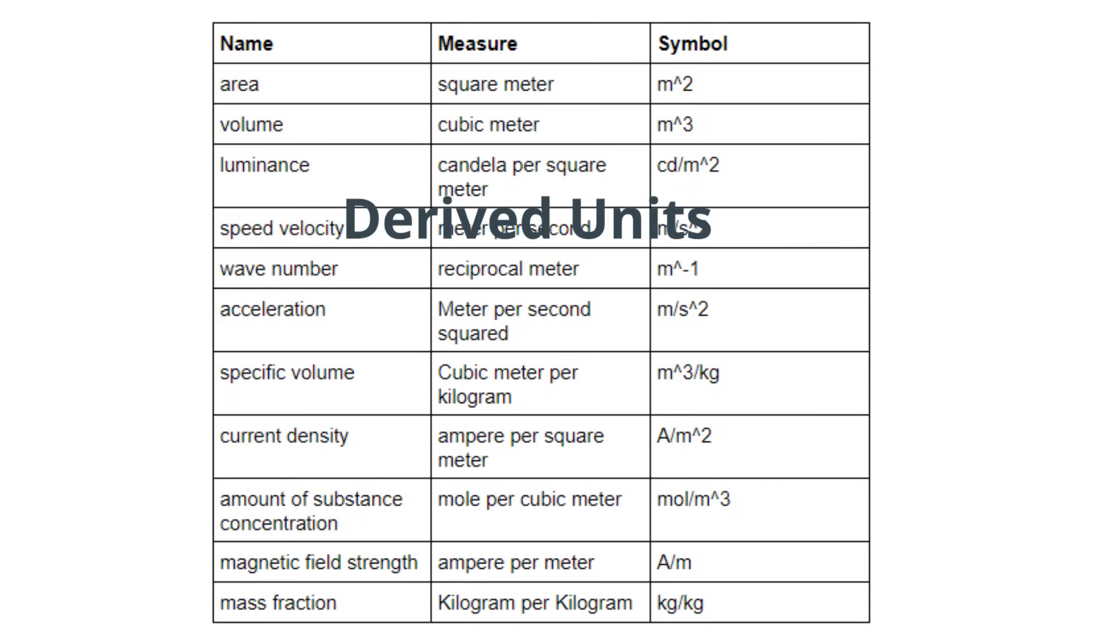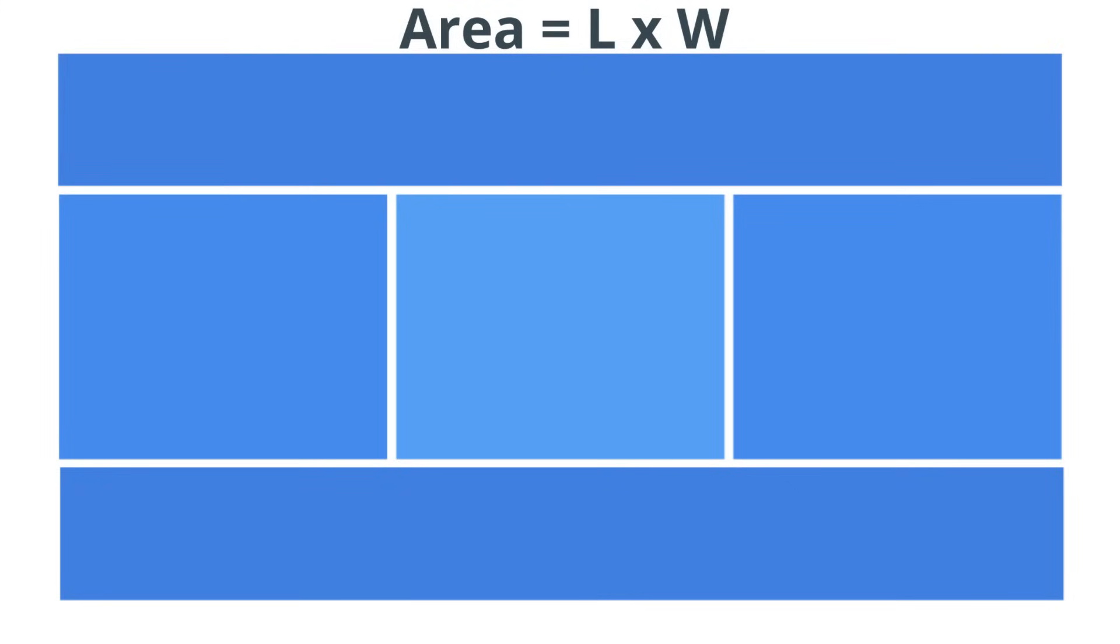The next units are the derived units. These use the base units in a formula. For example, the unit for area is a derived unit. In order to calculate area, you multiply length times width. Therefore, the unit is a square meter. It uses a base unit meter in the formula.